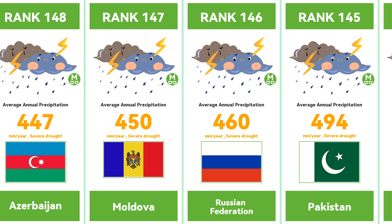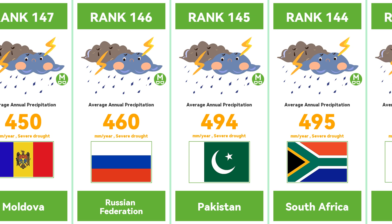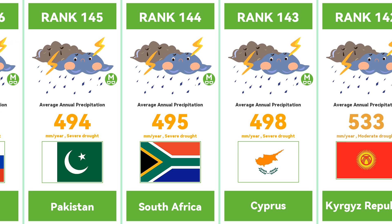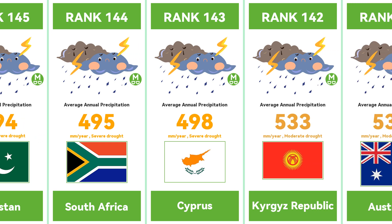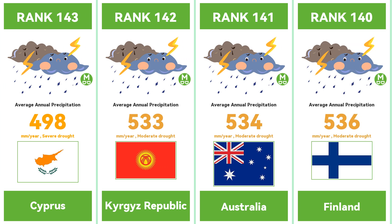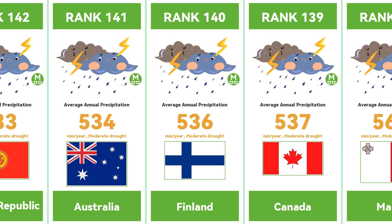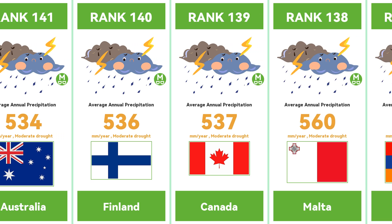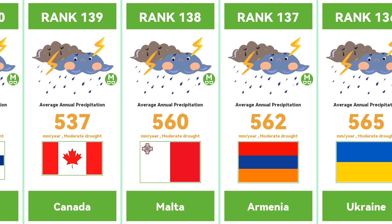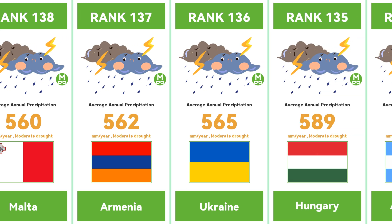In the middle zone, the average annual rainfall in many countries ranges from 500 millimeters to 1,500 millimeters. These countries include China, India, the United States, Russia, etc. The rainfall levels in these countries vary depending on their geographical location and seasons. For example, the southern and eastern regions of China usually have higher annual average rainfall, while the northwest and inland regions are relatively dry.